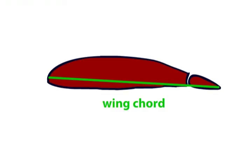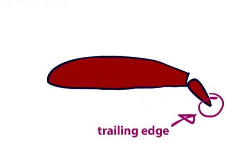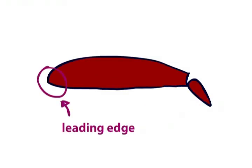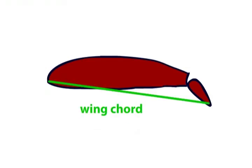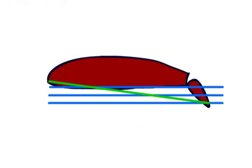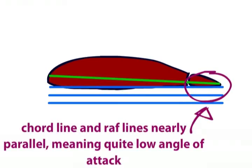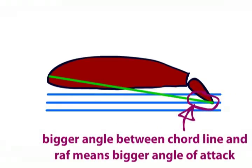This means that when the aileron moves, the trailing edge will also move, while the leading edge remains in the same place. The wing chord therefore changes to look like this, but the relative air flow stays the same. This has therefore changed the angle of attack from this to this. So there is now more lift than before.